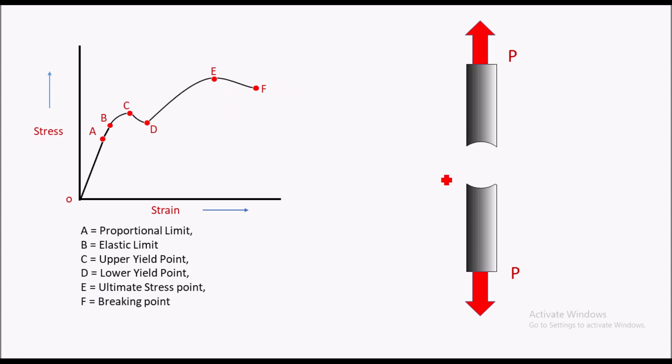After point E, the material will suddenly break down into two pieces and it will form a cup and cone-like shape. The value of stress corresponding to point F is called the breaking strength or breaking stress.